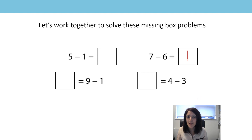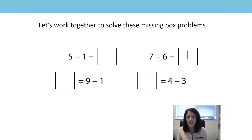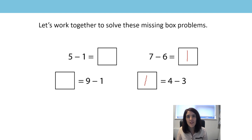This one is a little bit different because it's got the missing box at the start, but we've still got our consecutive numbers, so we can still use our generalisation. One equals four subtract three, because three is one less than four.